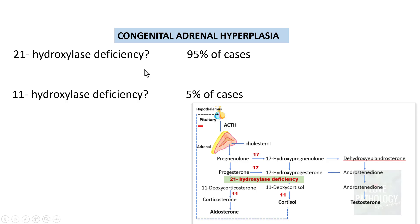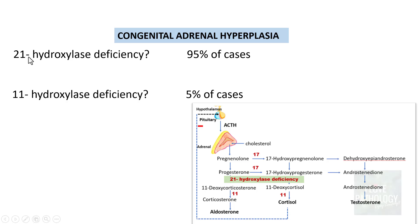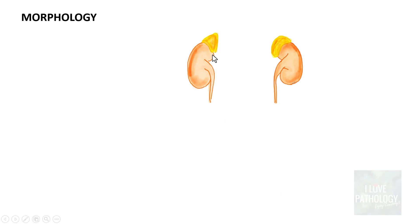21-hydroxylase deficiency constitutes around 95% of cases. The remaining 5% can be due to 11-hydroxylase deficiency, because deficiency of 11-hydroxylase similarly results in no aldosterone, no cortisol, no feedback inhibition, increased ACTH, and all the manifestations of increased testosterone levels.